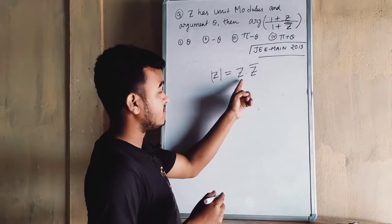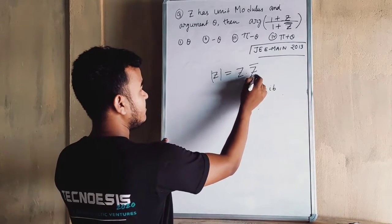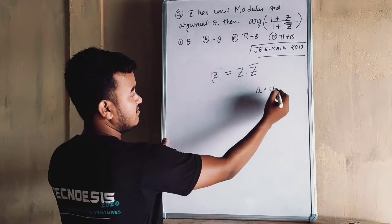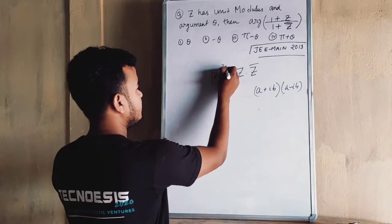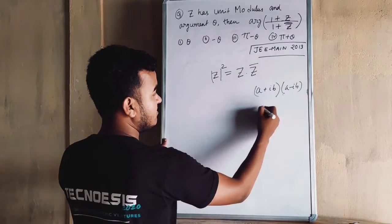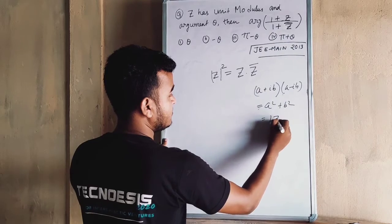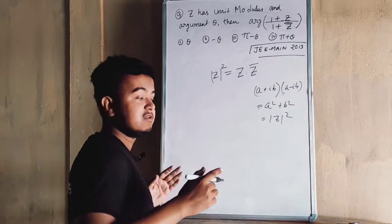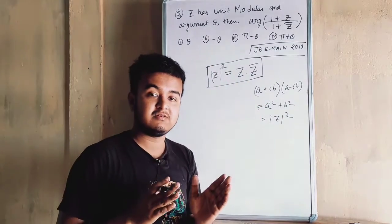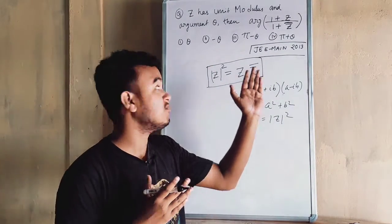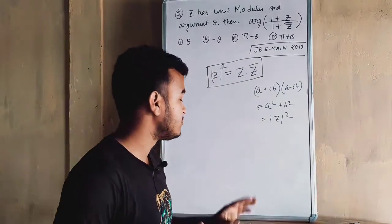You have to prove that: if Z equals a + ib, then Z-bar equals a − ib. Now, Z into Z-bar gives (a + ib)(a − ib) = a squared plus b squared, which is the modulus of Z squared. This formula is important — you have to write and apply this formula.